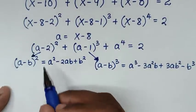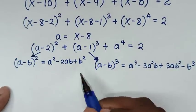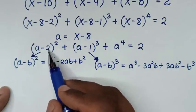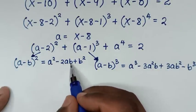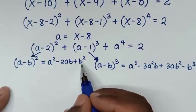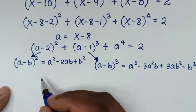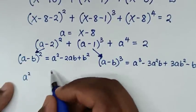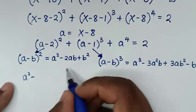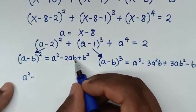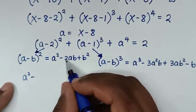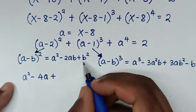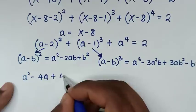For the first part, (a minus 2) squared: our a is the same a, b is 2. Substituting 2 into the expansion, it will be a square minus 2 times a times 2, which gives minus 4a. Then plus b square, which is 2 square, equal to 4.